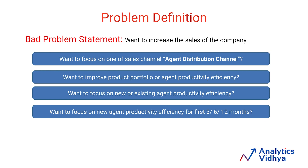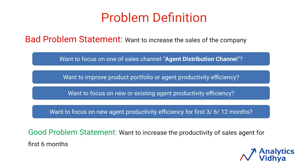Let's say the answer was: we want to look at new agent productivity efficiency. So do we want to look at it for the first three, six, or twelve months? A good problem statement would then look like: 'The company wants to increase the productivity of sales agents for the first six months.'